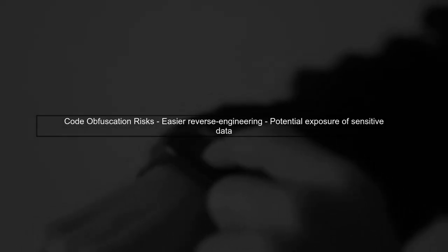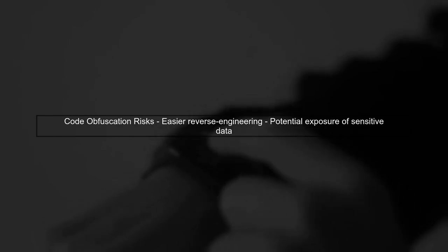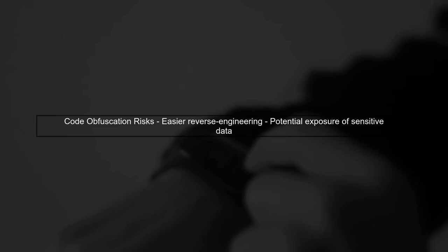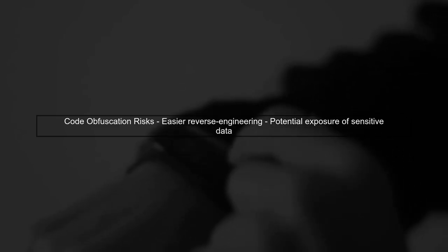Lastly, consider the implications for code obfuscation. Including parameter names can make it easier to reverse engineer your code, potentially exposing sensitive information.